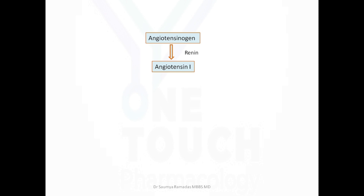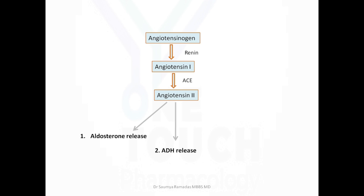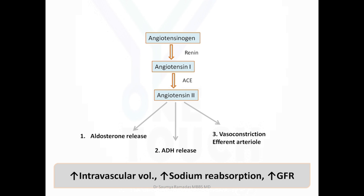Now let us see how renin secretion affects the glomerular filtration rate. Renin converts angiotensinogen to angiotensin 1, which is converted to angiotensin 2 by angiotensin converting enzyme. Angiotensin 2 increases aldosterone release causing salt and water retention. It also causes release of antidiuretic hormone, increasing water reabsorption from the collecting duct. Renin also causes vasoconstriction of the efferent arteriole, all of which serve to increase GFR by increasing intravascular volume and sodium reabsorption.